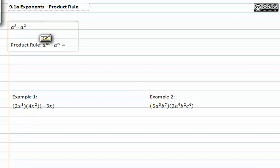When you have two bases that match and each base has an exponent, in this case we're looking at bases of a and exponents of three and two. When you multiply those bases together you can add the exponents.